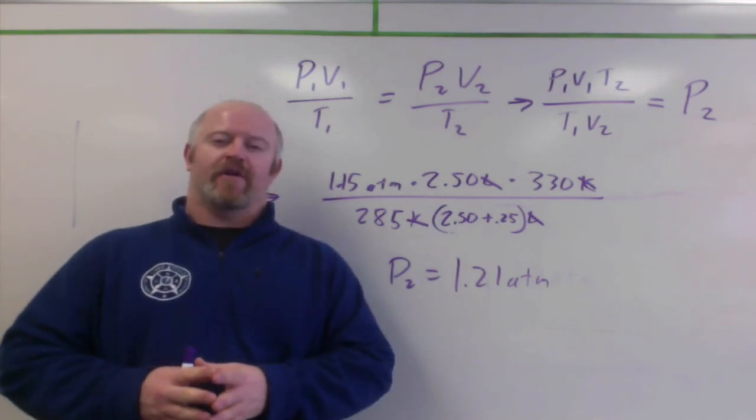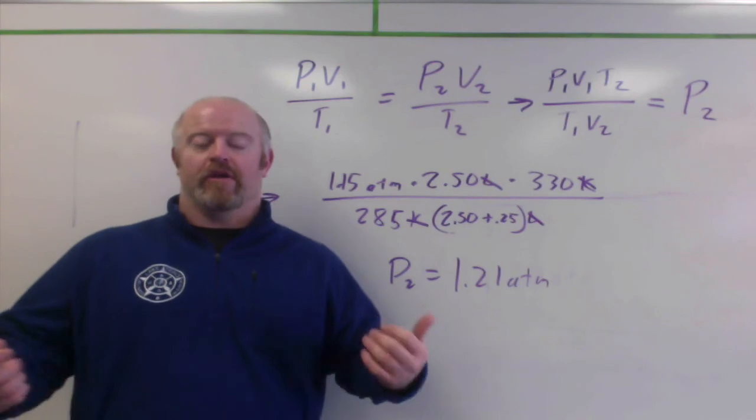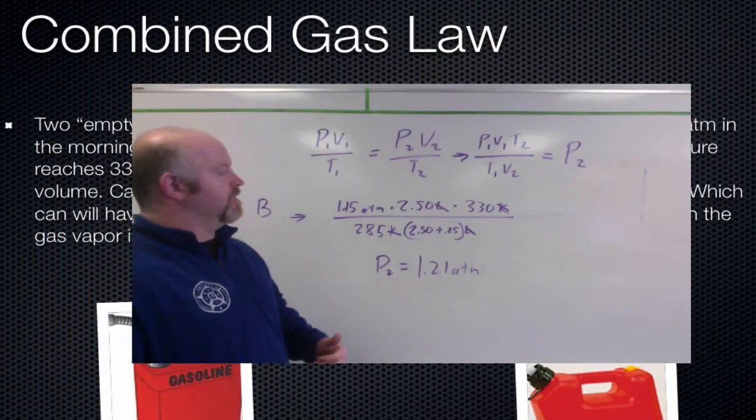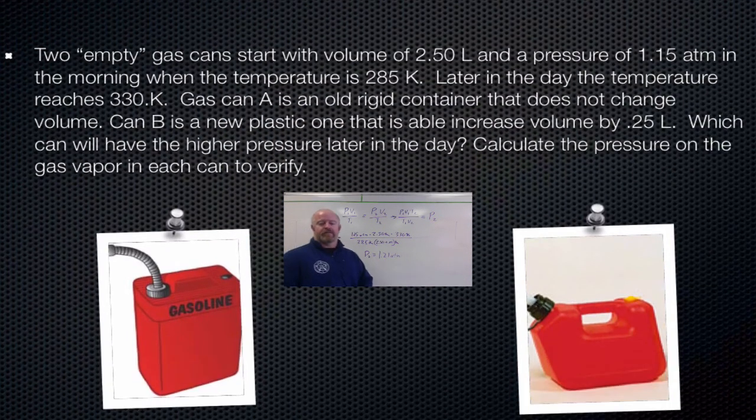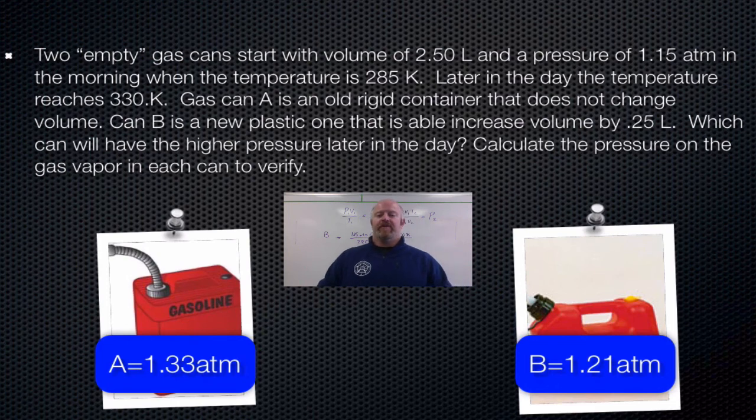So we see because the volume was able to expand, the overall pressure went down a little bit, which would make sense because if when volume goes up, pressure has to go down between that relationship. So between those two cans, if we go back to our screen, the rigid can would be 1.33 atmospheres and the smaller can would be 1.21 atmospheres.